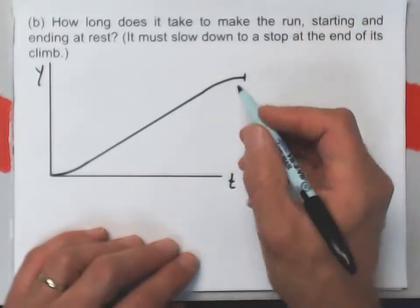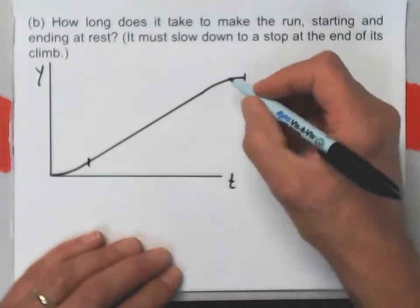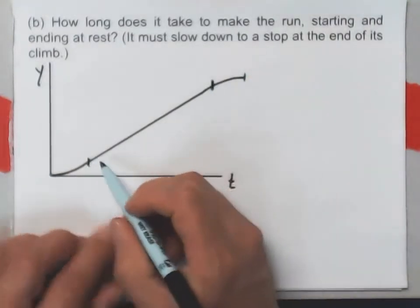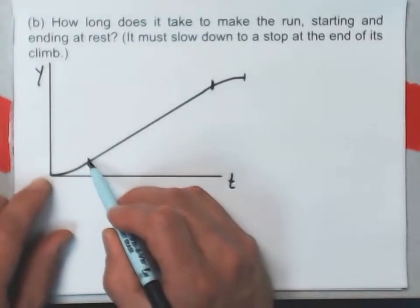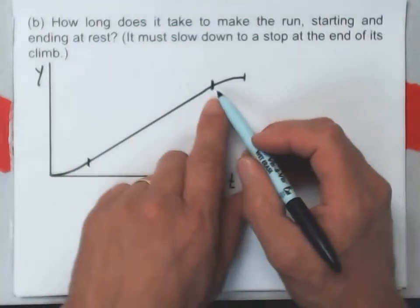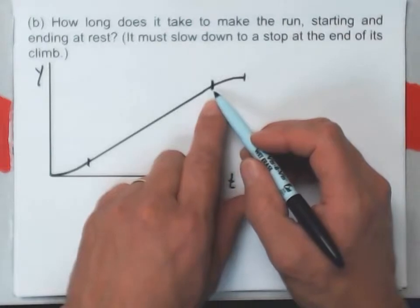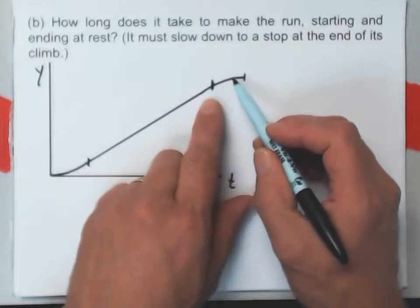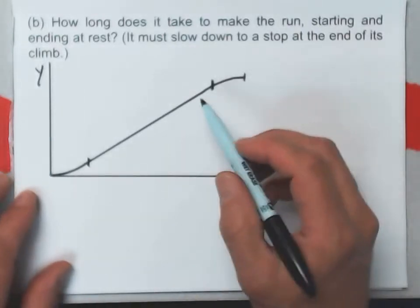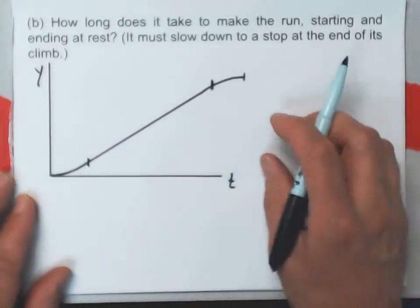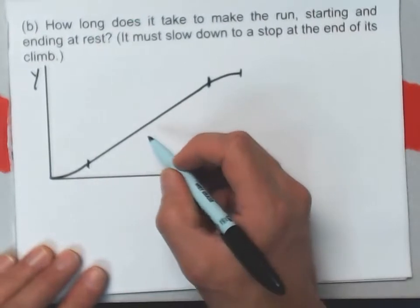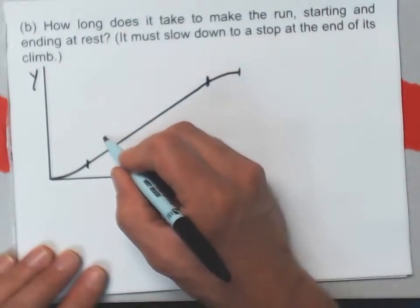And then it slows to a stop. And if it's slowing down, the slope of the y versus t graph will be decreasing. And if it comes to a stop, it's going to decrease to zero. So it does something like this. So here's where it is at the very top, here's where it began. There's a span of time here where it's accelerating from rest to a final velocity.